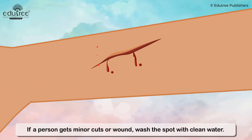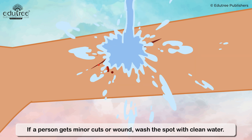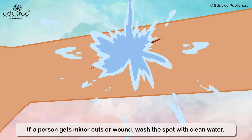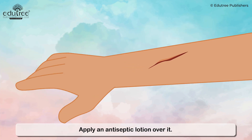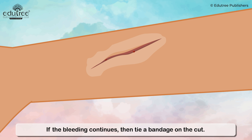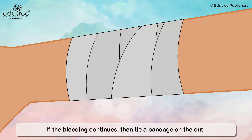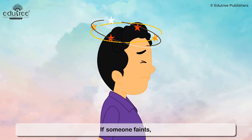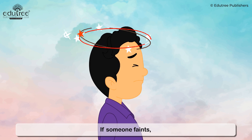If a person gets minor cuts or wounds, wash the spot with clean water. Apply an antiseptic lotion over it. If the bleeding continues, tie a bandage on the cut.